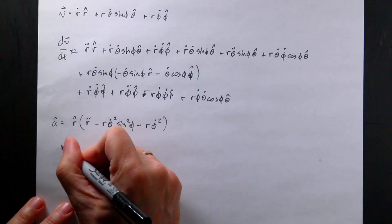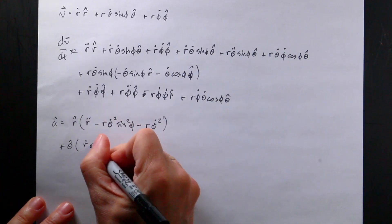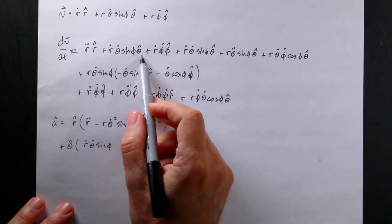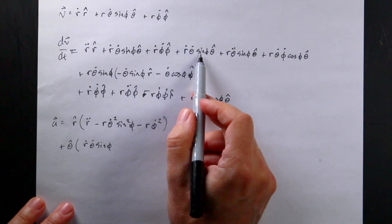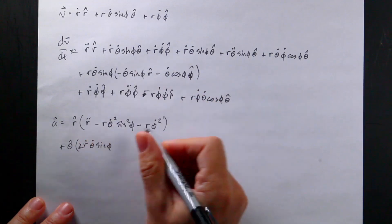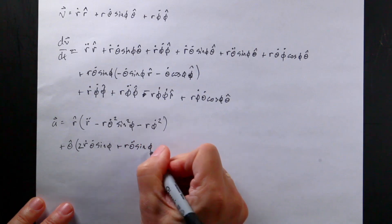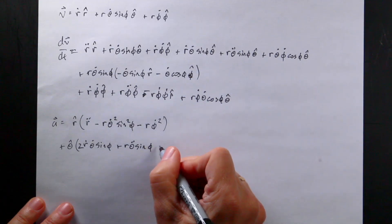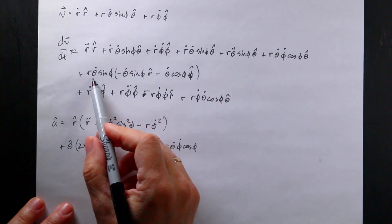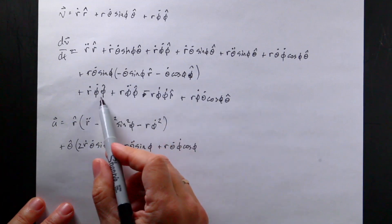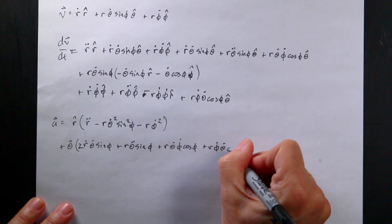Now for the theta-hat terms: I have r-dot theta-dot sine phi, plus another r-dot theta-dot sine phi — so two of those — plus r theta-double-dot sine phi, plus r theta-dot phi-dot cosine phi, and another r phi-dot theta-dot cosine phi, so two of those as well. I confirm that those pairs match up correctly.